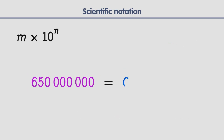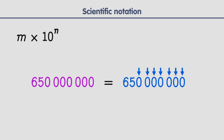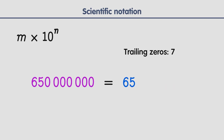To write a large number in scientific notation, the first step is to count how many consecutive zeros are at the end of the number. These zeros are called trailing zeros. In this number, there are 7 trailing zeros. The second step is to delete all those zeros, leaving only the number 65. The last step is to multiply this number by 10 raised to the power of 7, the number of trailing zeros that the number originally had. So we can conclude that scientific notation is simply a special way of writing numbers.